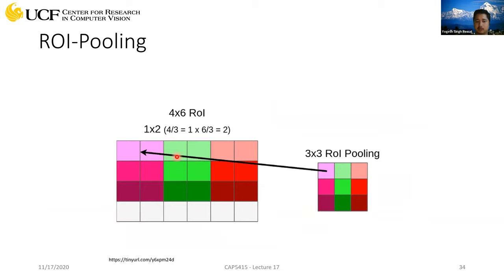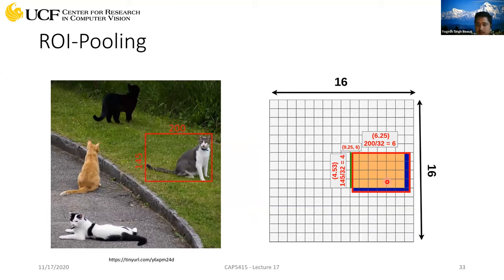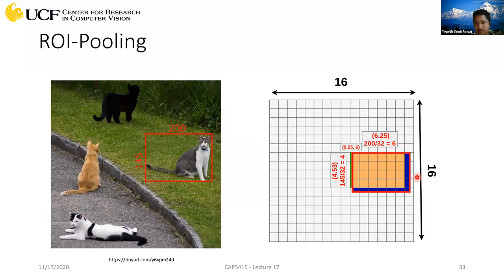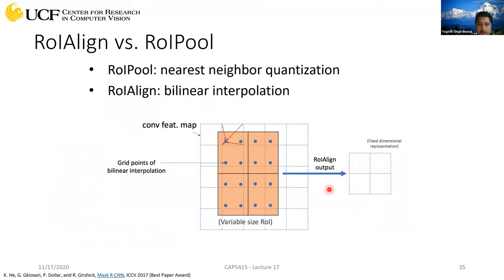For ROI pooling, you take the max pooling operation to convert extracted features to a fixed resolution — say 3x3. Again, there's loss of information because your target resolution might not match your input resolution perfectly. The width and height should be perfectly divisible by your target resolution; when they're not, you lose those pixels. Even the bottom pixels aren't considered. So how can we fix that? Instead of ROI pooling, we'll use ROI Align.